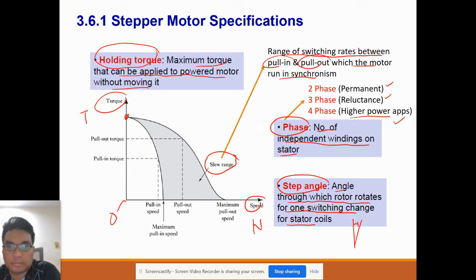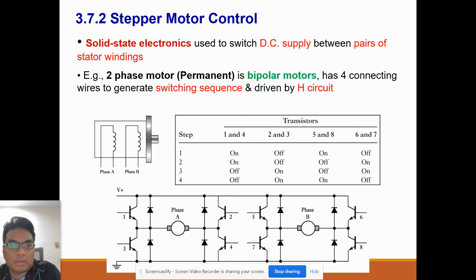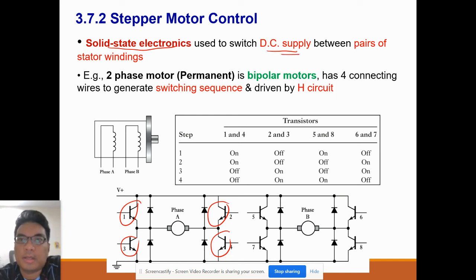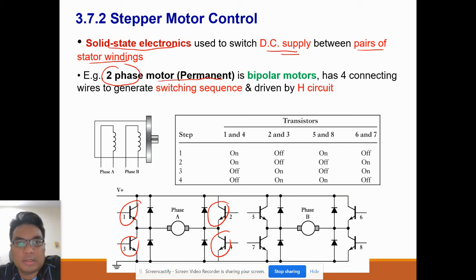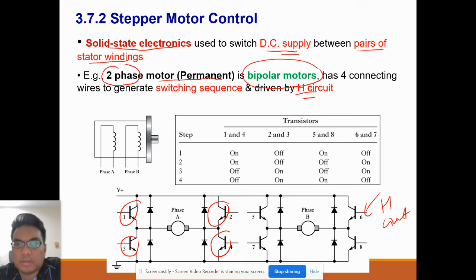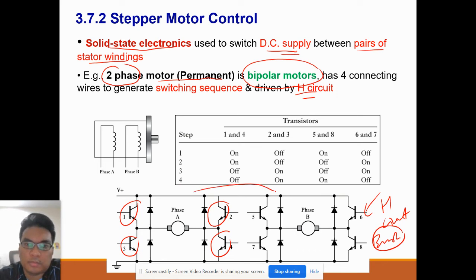Moving to stepper motor control — how you can control a stepper motor. Solid-state electronics such as transistors are used to switch the DC supply between the step windings. For example, a two-phase permanent stepper motor — which is actually a bipolar motor — has four connecting wires to generate a switching sequence and is driven by an H-bridge circuit, similar to the brush motor but more complex since it is bipolar.